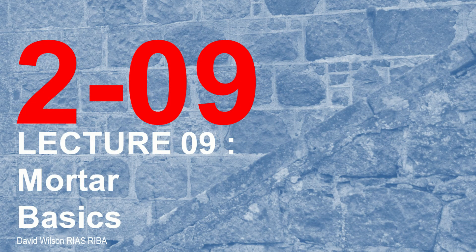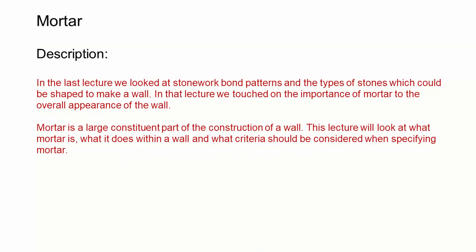This is the ninth lecture in the series looking at masonry construction. This lecture will look at the basic principles of mortar. In the last lecture we looked at stonework patterns and how stone could be put together to form different appearances, and we touched upon how important it was that mortar was considered. Mortar is a large constituent part of wall construction, and this lecture will look at what mortar is, what it does within a wall, and what criteria should be considered when specifying it.